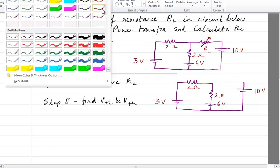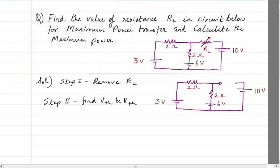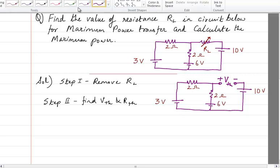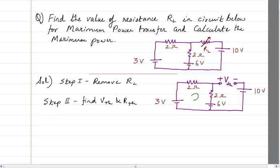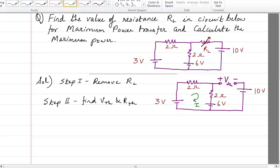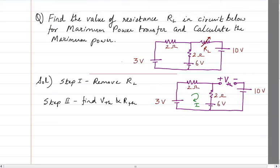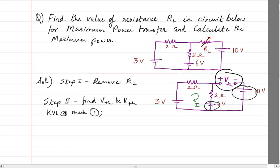Whatever remains, we have to find out VTH — this is going to be plus-minus VTH. Step 2 is to find VTH and RTH. First, we need to find out the current here; note that the current at the open terminal is going to be 0. If we find the current through the circuit, we can write the voltage across the elements and set up a mesh equation to get VTH.